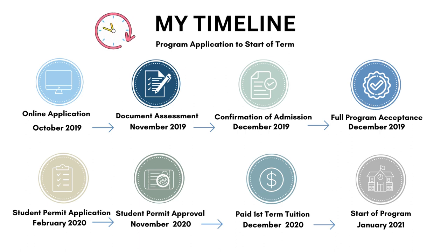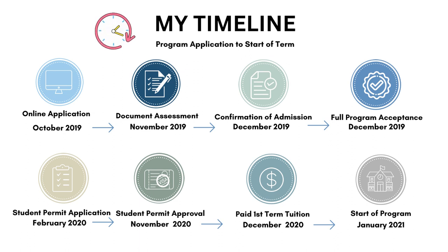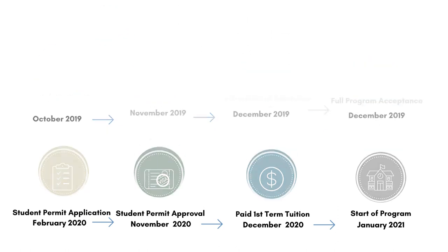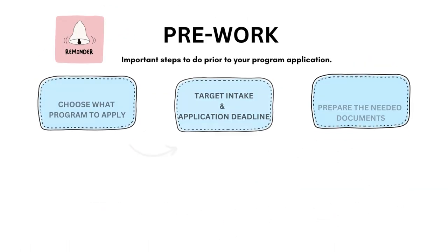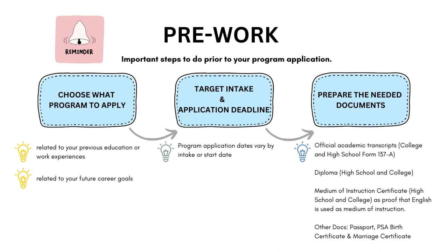I then applied for my student permit in February of 2020, which got approved in November that year. To confirm my enrollment, I paid the first term tuition fee in full and started my program in January of 2021. Now let me also show you some pre-work or important steps that you must do prior to submitting your program application.